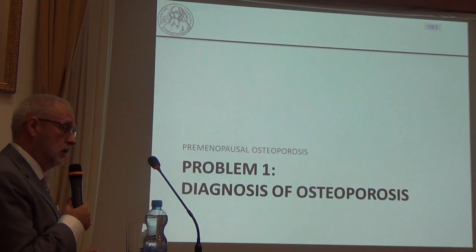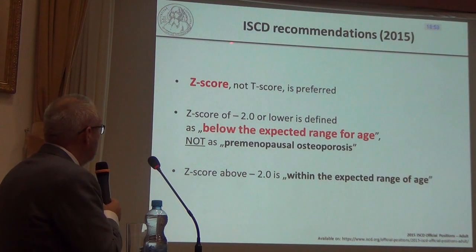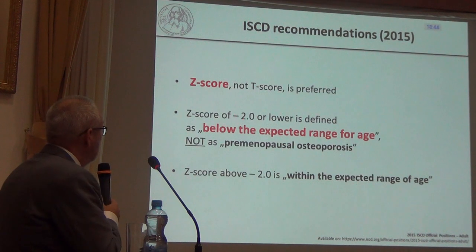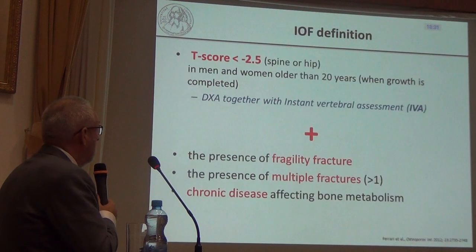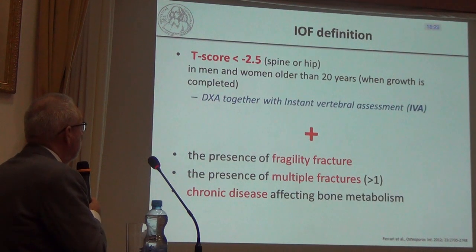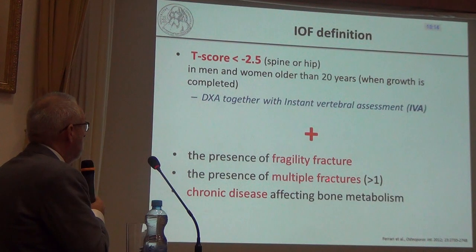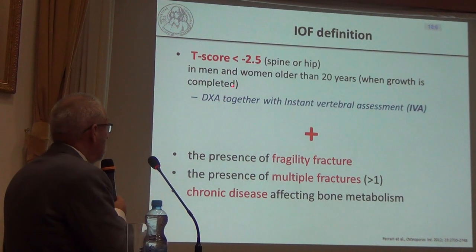There are two main recommendations for diagnosis. The ISCD recommends using the Z-score: if the Z-score is less than minus 2.0 it is defined as below the expected range for age, and they do not recommend using the term premenopausal osteoporosis. The IOF recommends using a T-score of minus 2.5 in women older than 20, together with the presence of fragility fractures, multiple fractures, or chronic diseases affecting bone metabolism, to diagnose premenopausal osteoporosis.